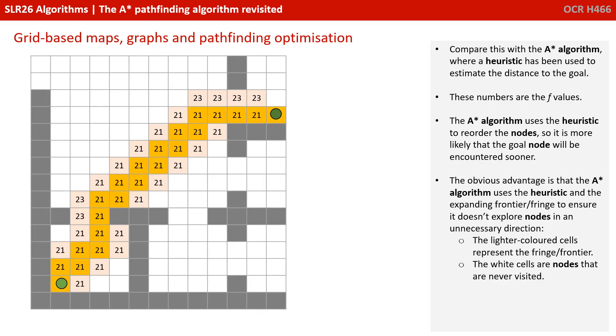The obvious advantage is that the A-star algorithm uses the heuristic and this expanding frontier or fringe to ensure it doesn't explore nodes in an unnecessary direction. The lighter coloured cells represent the fringe or frontier, and the white cells are nodes that are never visited.